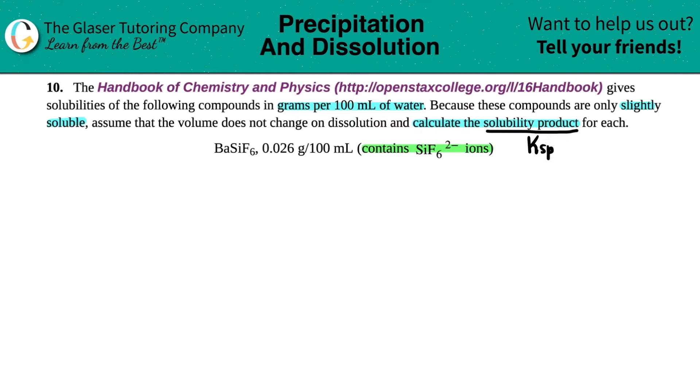So in essence, we have to find the Ksp for this compound, the BaSiF6. But remember, any Ksp comes from an equation. So I first have to write out the equation. Let's do that first.